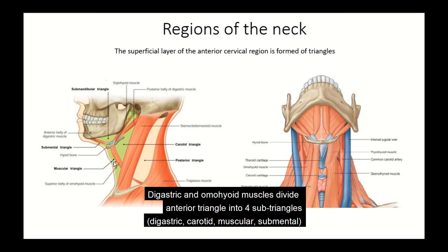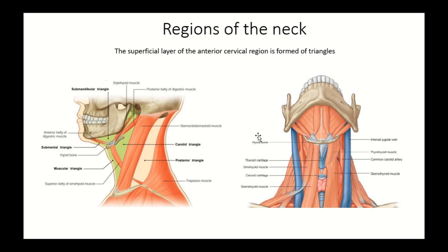The submental triangle is bounded by the anterior belly of digastric on either side and the hyoid bone below. It is an unpaired triangle and cannot be clearly appreciated in a side view. Looking at the throat region from the front, we can see the hyoid bone, the anterior belly of digastric on both sides forming the submental triangle, along with the digastric triangle clearly visible. These are the subdivisions of the anterior cervical region in the superficial plane of the throat region.